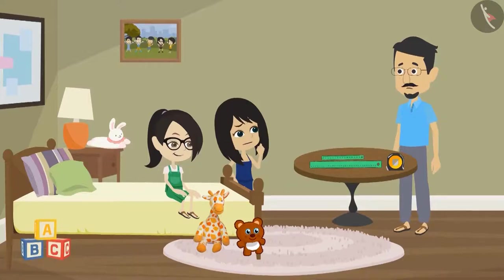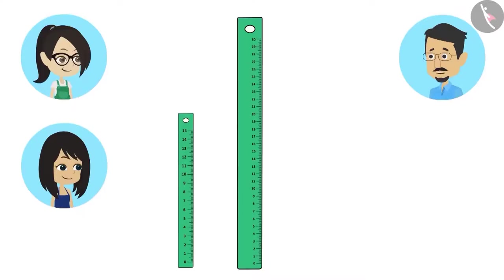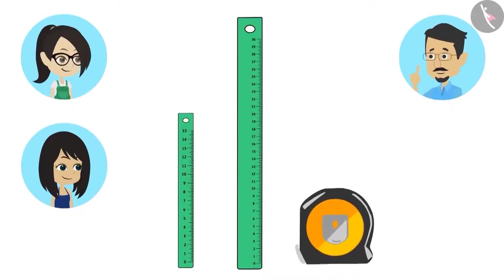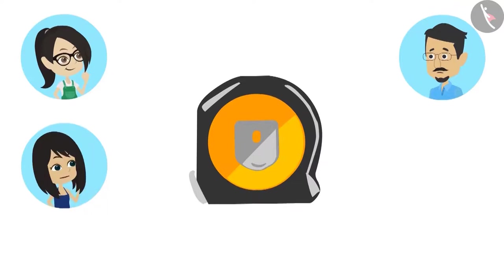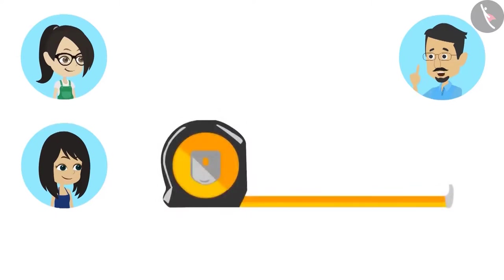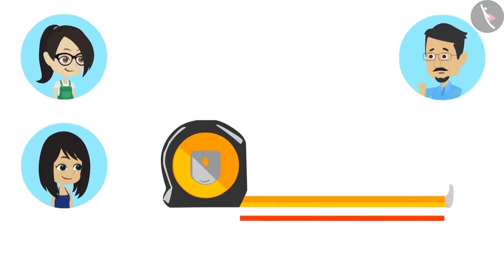But Papa, if we want to measure something longer than 30 centimeters, how will we measure it? For that, we will use this scale. But Uncle, this scale is very small. No, this scale is very long — so long that it can measure your height. Our height? With this scale? How? To use this scale, the handle on the outside has to be held and pulled. Pulling this handle brings the scale out, and with this scale we can measure the height.